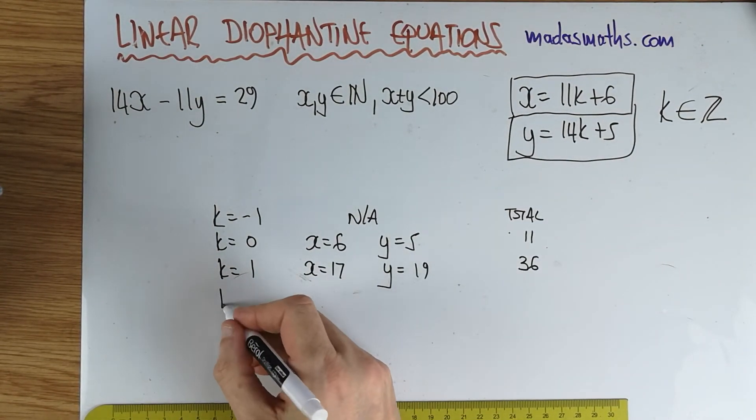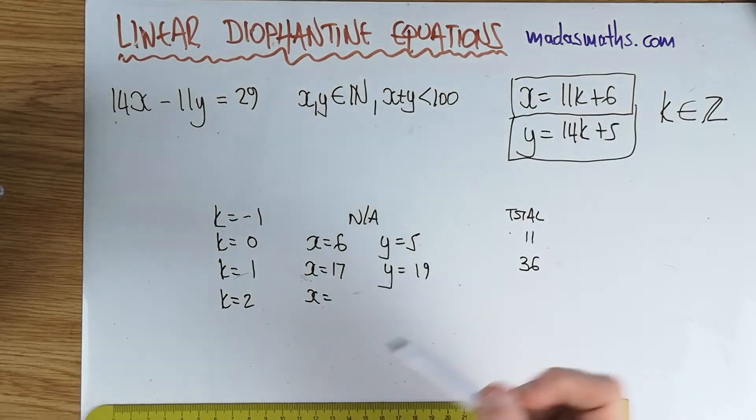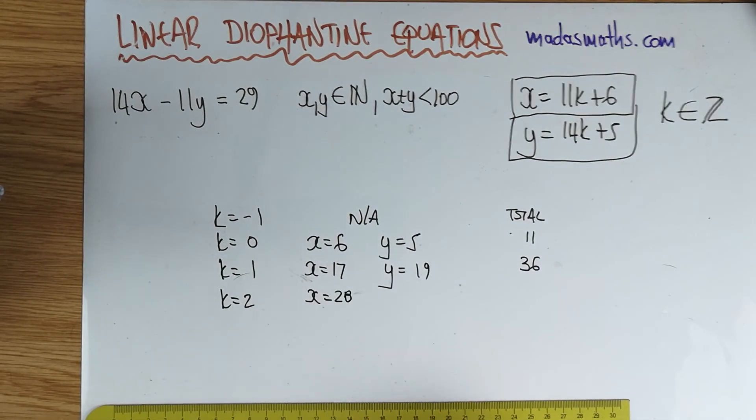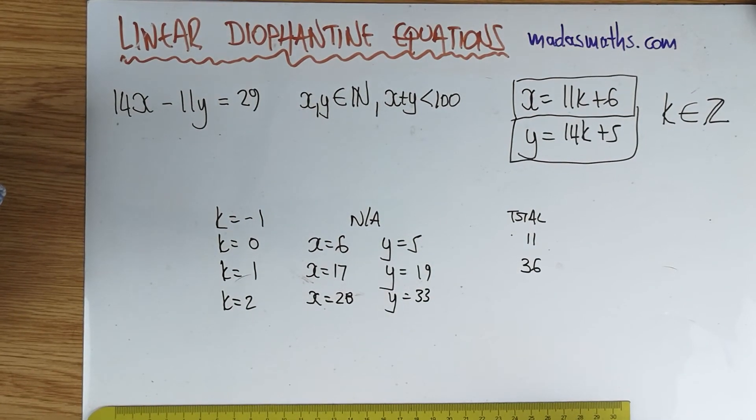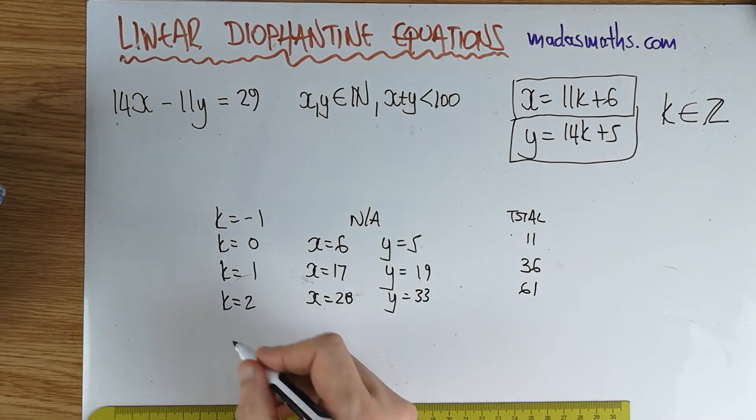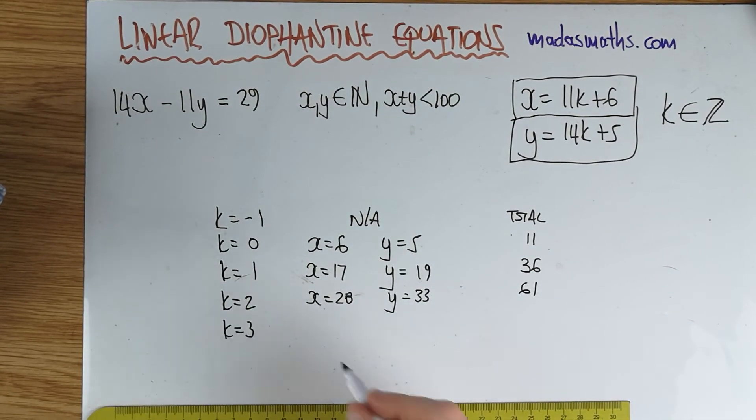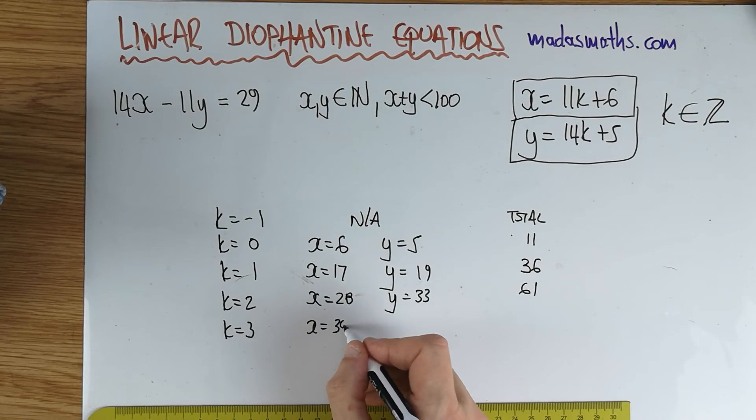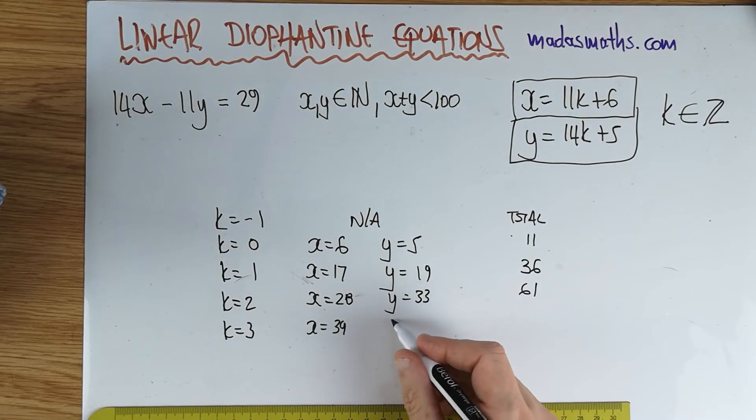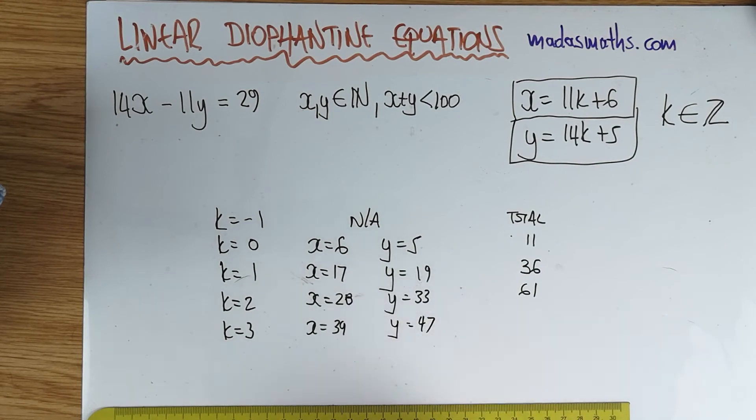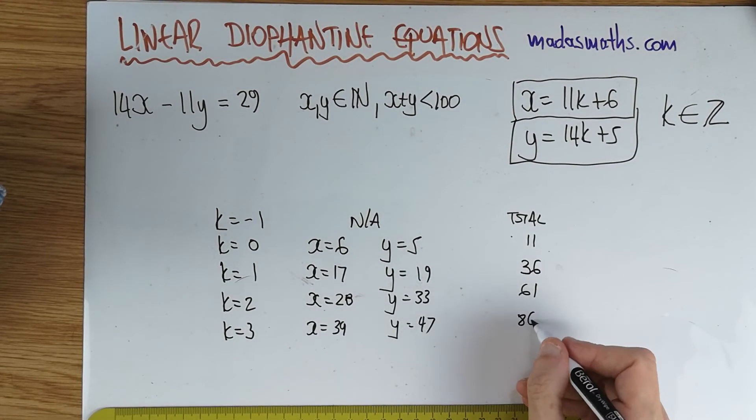k is equal to 2, x is equal to 28, and 28 plus 5 is 33. That's 61. So it's okay. k is equal to 3, 33 plus 39. I'm getting quite tight now. 3, 42, 47, with a total of 79 and 86.